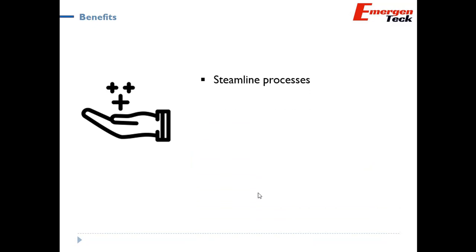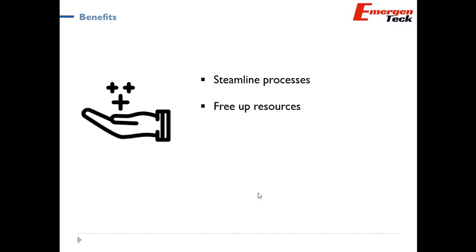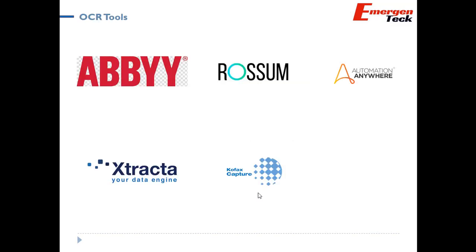This is how the entire intelligent document processing activity can be streamlined and automated using OCR. The typical benefits include: it streamlines the process because it's automated end-to-end; it frees up resources because it's very fast; it reduces efforts and the number of people required to extract data, leading to FTE savings. OCR is now stable and powerful, and ROI can start being realized within three to six months.